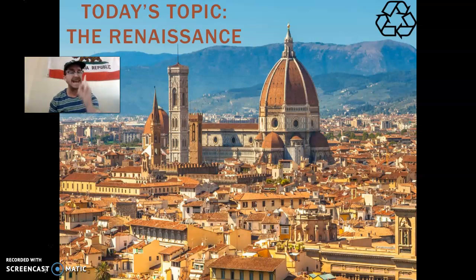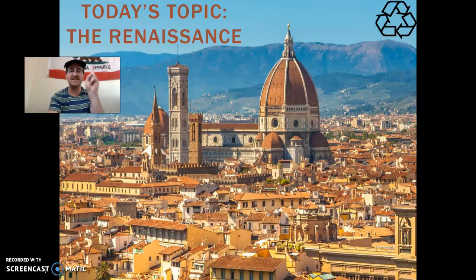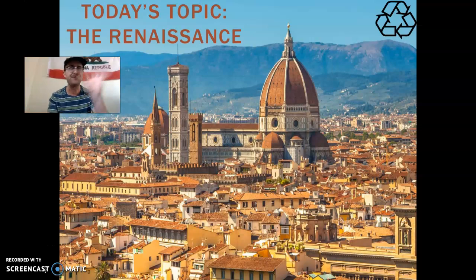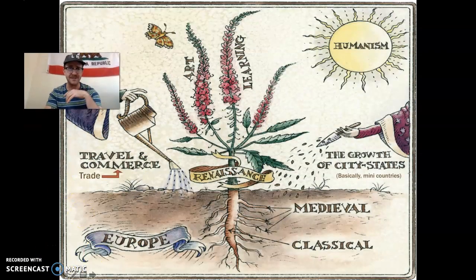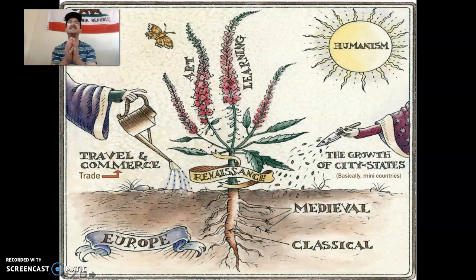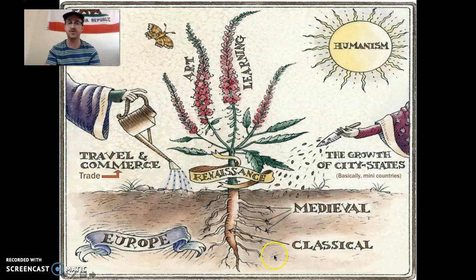The word Renaissance is technically French, but this picture you're looking at here is actually a city known as Florence in Italy. This is called the Duomo, and if you ever go to Italy, make sure you go to this place. Let me first give you a little diagram that will help you understand this term — this era called the Renaissance. What you have here is a diagram showing you essentially how the Renaissance actually bloomed into existence.